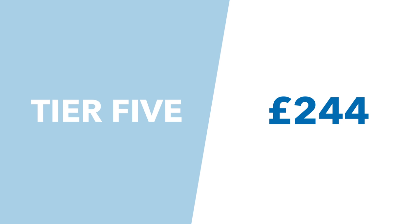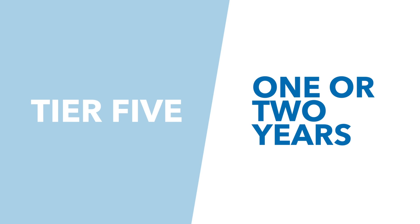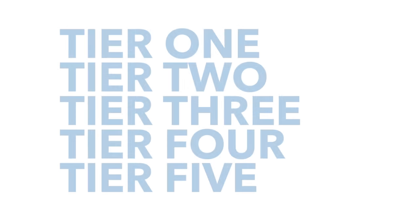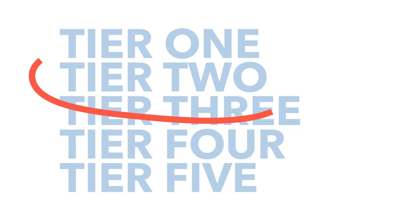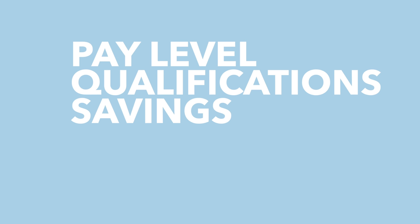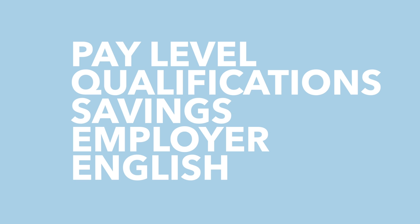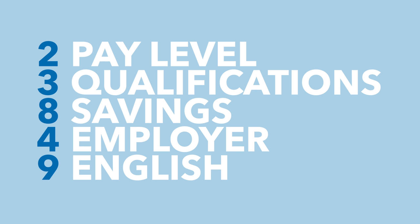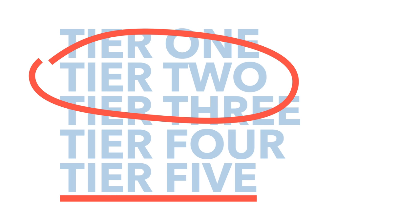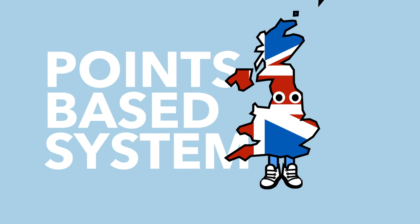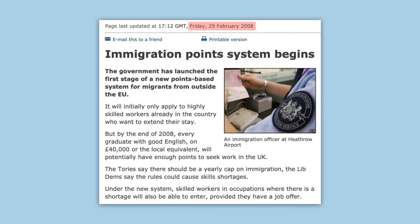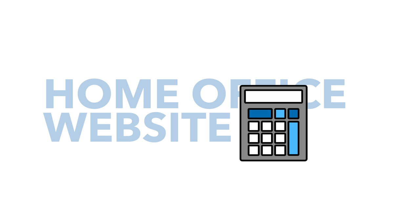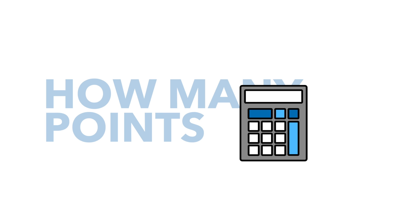Tier 5 visas are for temporary workers, costing £244 each, and allow you to stay for either one or two years depending on your job. Interestingly, if you apply for a Tier 2 visa you'll be asked questions about how much your job pays, your qualifications, how much you've saved, who your employer will be, and how good your English is — and you'll be awarded points based on your answers. It's because of this that the UK actually already has a points based immigration system, brought in under Gordon Brown in 2008 and consistently amended since. Until 2016 there was even a calculator on the Home Office website where you could find out how many points you'd be worth.